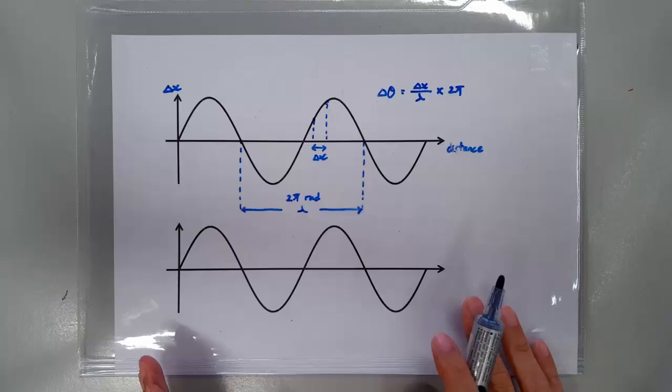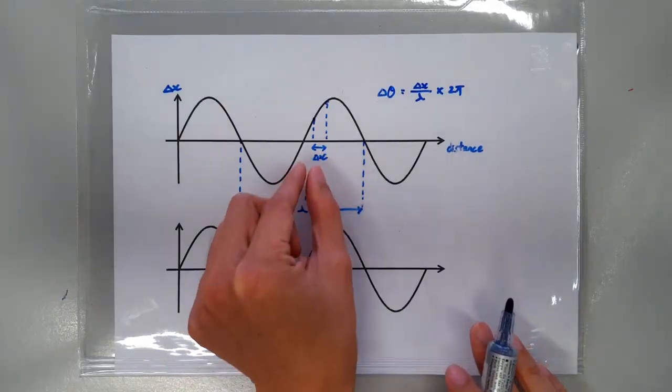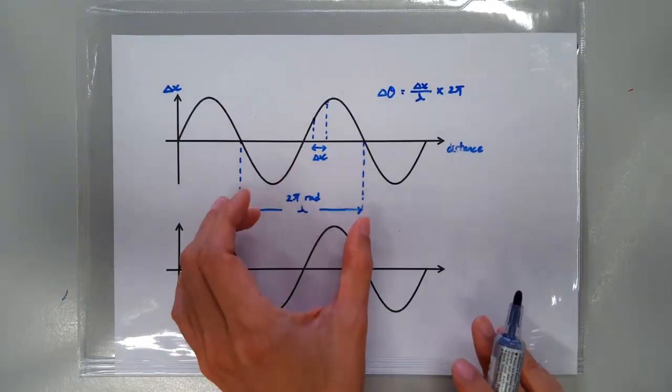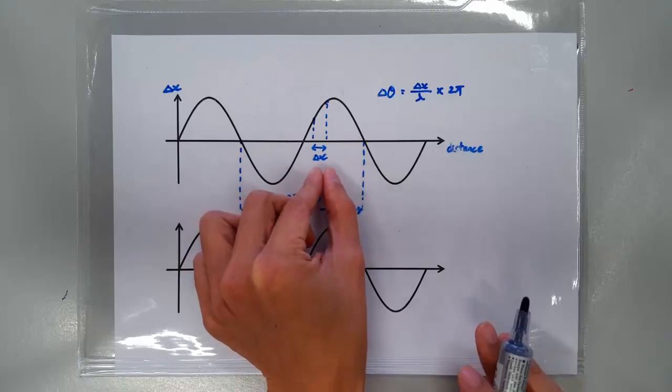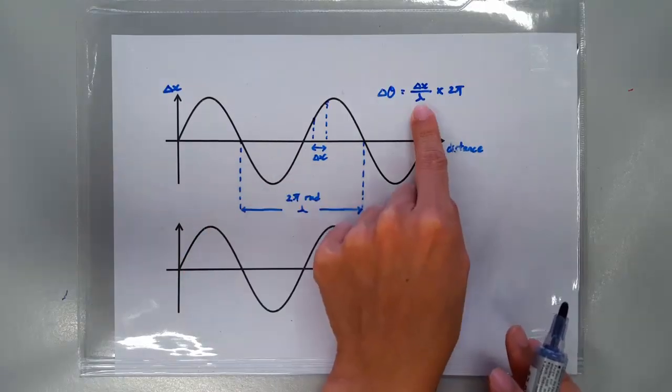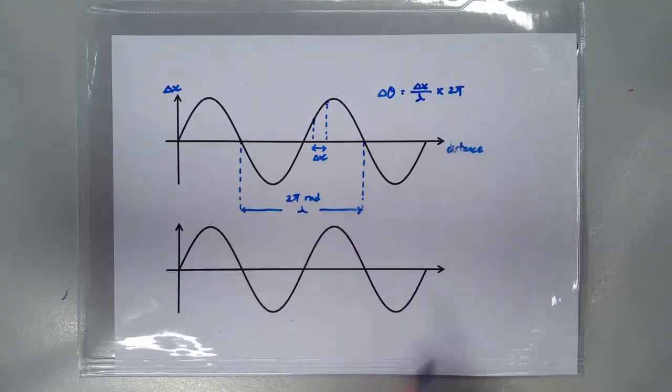Yup, it's just a simple proportion. So, we are figuring out what fraction of a full wavelength does Δx correspond to. We figure out that fraction, and that fraction times 2π would be the phase difference.